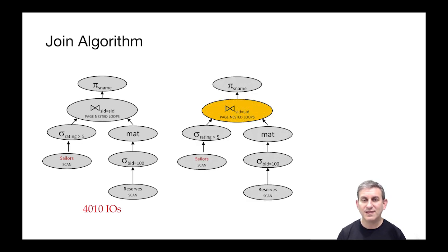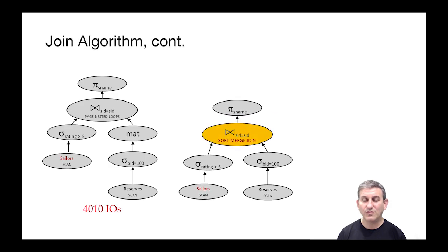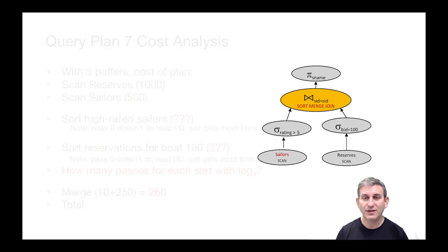What about if we consider a different join algorithm? Say, page nested loops join becomes sort merge join. Note that we've pushed down the selections already to the sort merge join, so we'll only be sorting and merging the outputs of the selection. But what's the cost of that overall? Let's have a look at that closely.